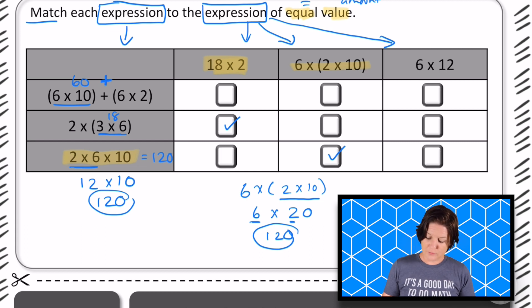Plus we're adding 6 x 2, which is twelve. And 60 + 12 equals seventy two.